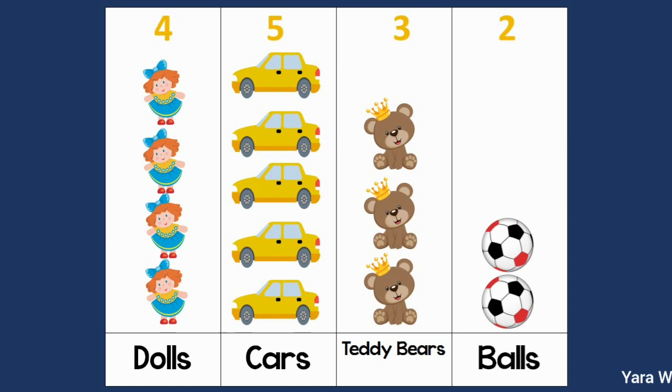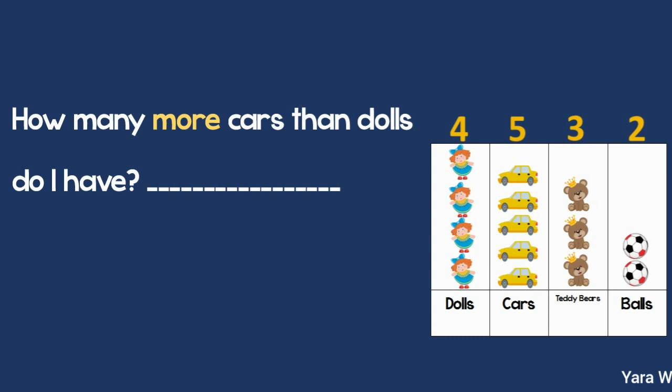Let's see how 'how many more and less' questions work. How many more cars than dolls do I have? First, I want to know what I'm comparing — I'm comparing cars and dolls. We have 5 cars and 4 dolls. I need to know how much more 5 is than 4, so I will subtract. 5 cars minus 4 dolls equals 1. So there is 1 more car than doll.